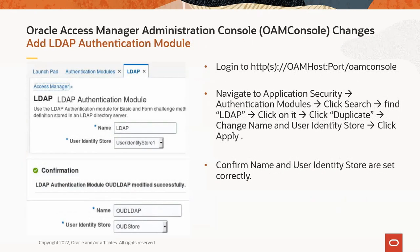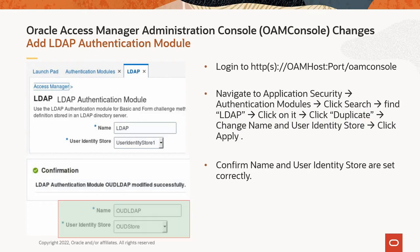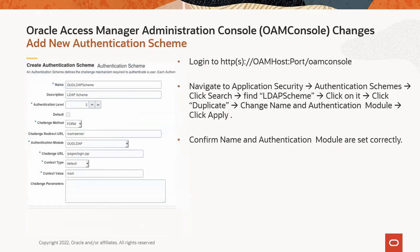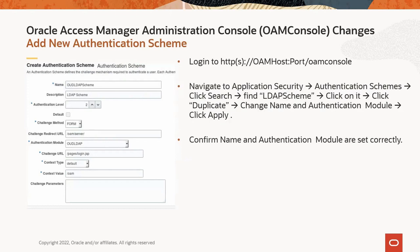Here we'll add an LDAP authentication module — it will be used in the new authentication scheme. On the OAM console, navigate to the given path and find the LDAP module. Create its duplicate, change the name, and set it to the right user identity store, then click Apply to save changes. This next step is to add a new authentication scheme. On the OAM console, navigate to authentication schemes, find the LDAP scheme, and create its duplicate. Change the name, set the authentication module to the one added in the previous step, and click Apply to save changes.